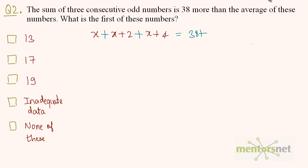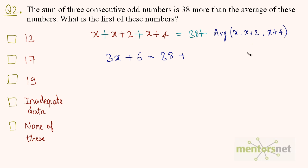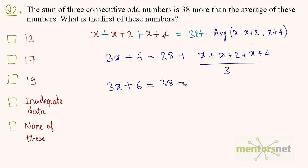Their sum is equal to 38 plus the average of x, x plus 2, and x plus 4. So adding the left side: x plus x plus x is 3x, plus 2 plus 4 is 6, giving 3x plus 6. This equals 38 plus the average, which is (x plus x plus 2 plus x plus 4) divided by 3, also equal to (3x plus 6) divided by 3. Moving 6 to the right-hand side gives 3x equals 38 minus 6 plus (3x plus 6) divided by 3, which is 32 plus x plus 2.